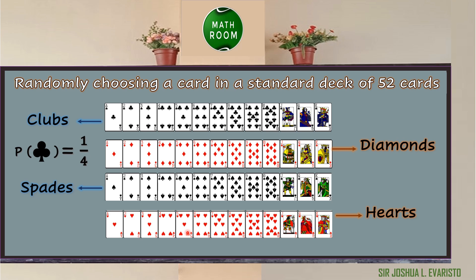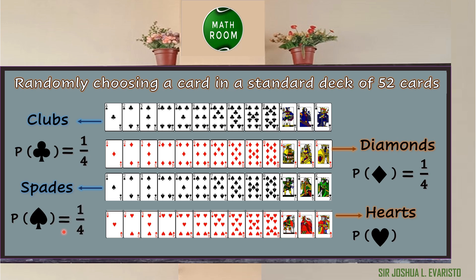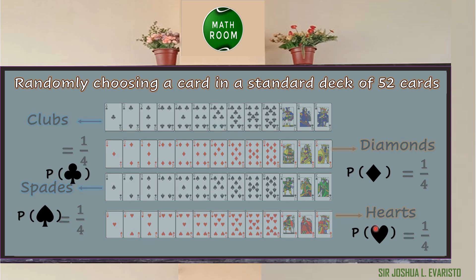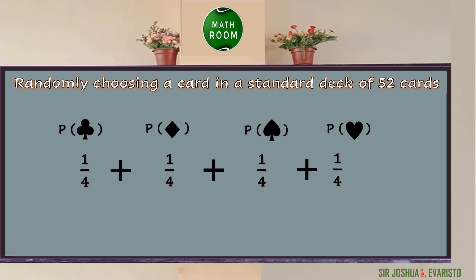Notice that each symbol is equally distributed in a deck of cards. The number of possible outcomes of the clubs, which is 13, is the same as the number of possible outcomes of the diamonds, spades, and even hearts. So the probability of getting a diamond is also equal to 1/4, the probability of getting a spade is also 1/4, and the probability of getting a heart is also equal to 1/4. If you add all the possibilities of each symbol, you get 4 over 4, since 1 plus 1 plus 1 plus 1 is equal to 4, then copy the same denominator, which is 4. So 4 over 4 is equal to 1.